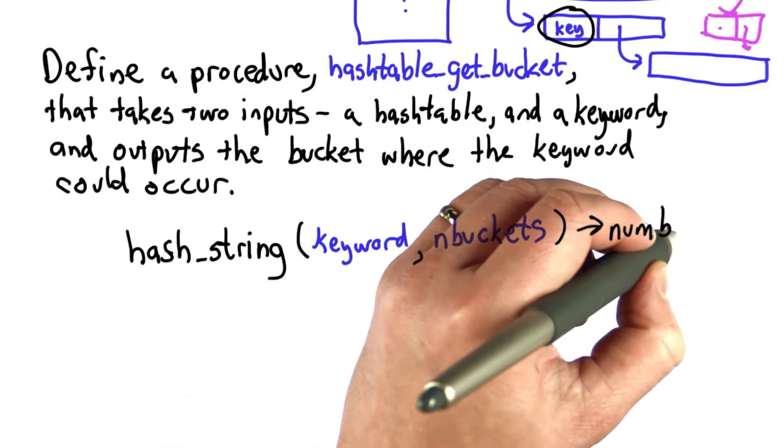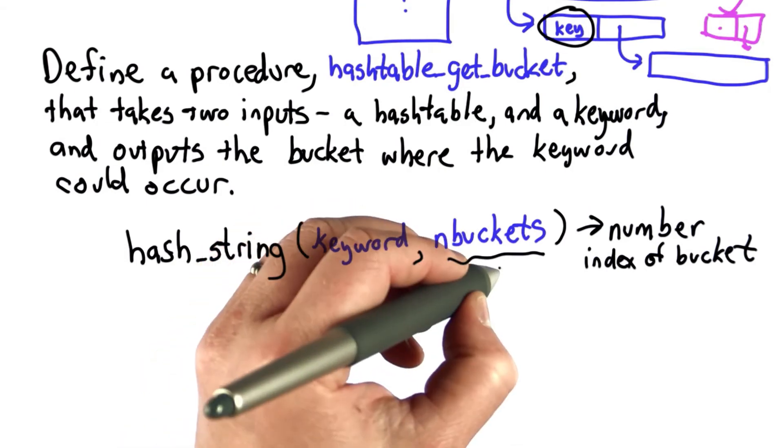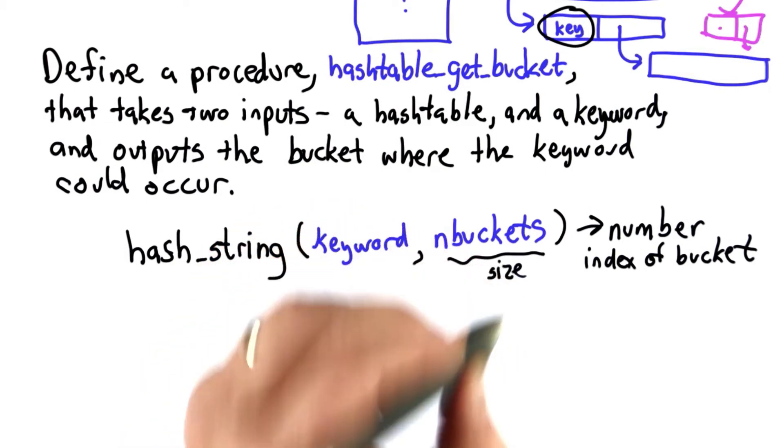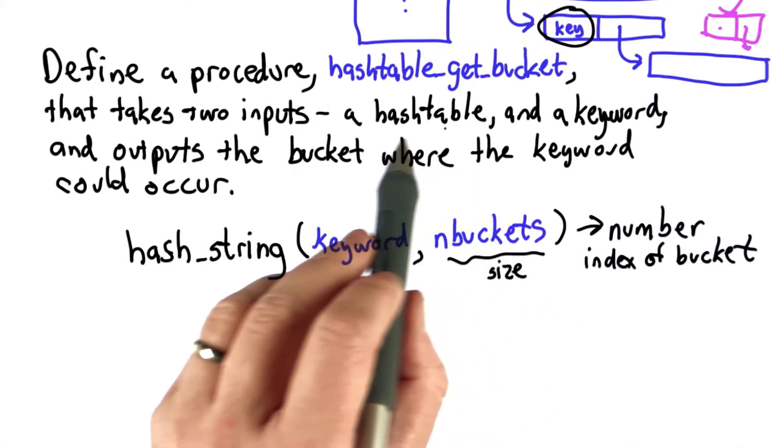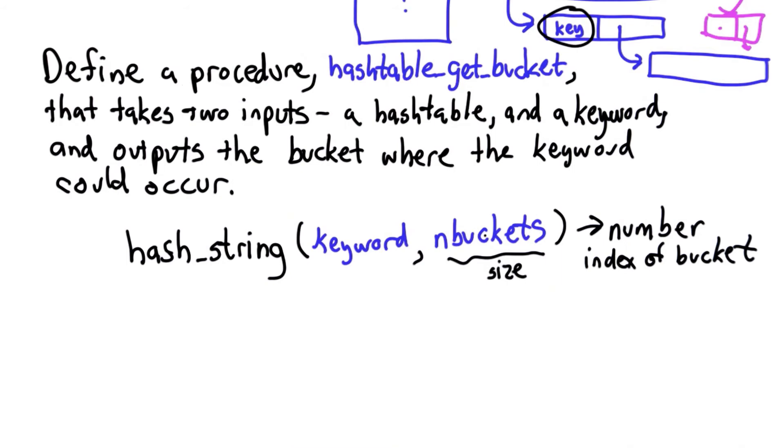There's a bit of a mismatch here that you'll have to think about to define hash_table_get_bucket. hash_string's input is the size, the number of buckets. The two inputs to hash_table_get_bucket are just a hash table and a keyword, so you need to figure out how to get the size of the hash table to pass into hash_string.